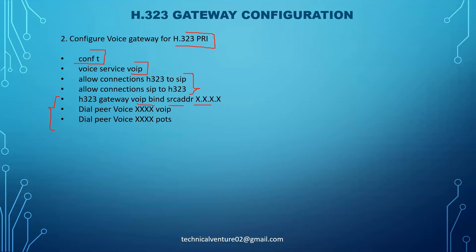The next important part is the H323 gateway VoIP bind source address command, followed by an IP address. If you remember, we added the H323 gateway on CUCM and gave an IP in the device name - you need to add that same IP address here as well, the same IP address which you added on the gateway.